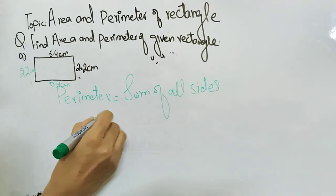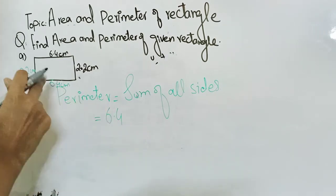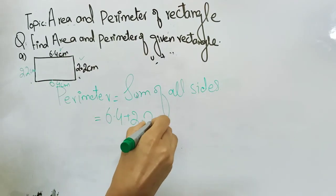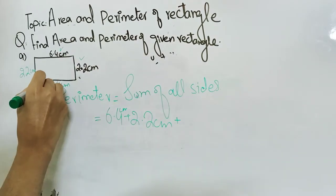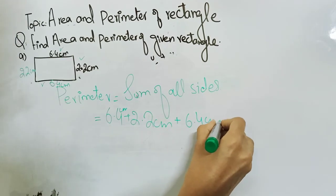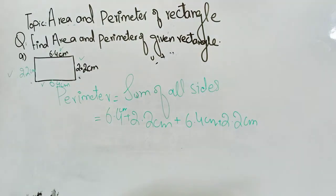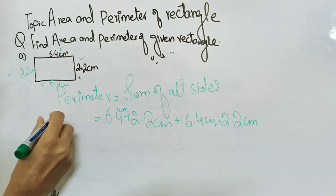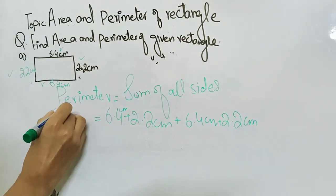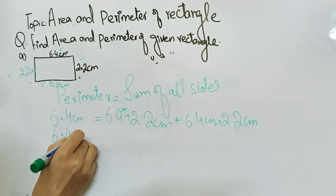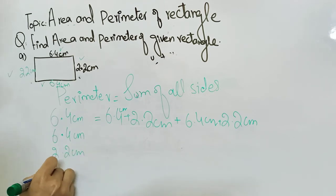We write all four values: six point four, two point two, six point four, and two point two centimeters. Now the question is how to add these decimal values together.